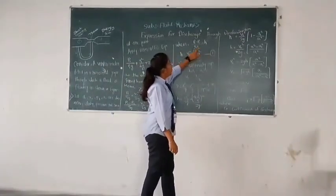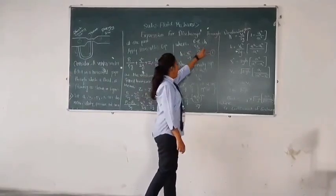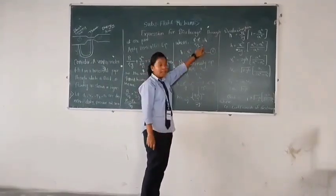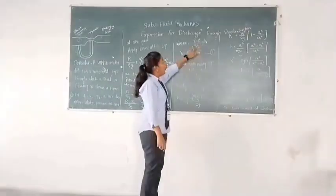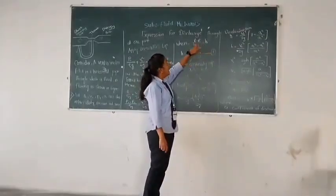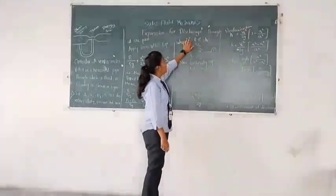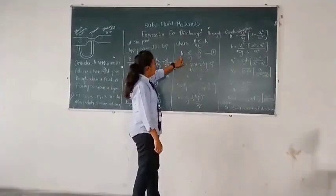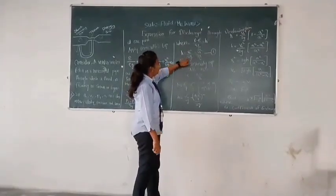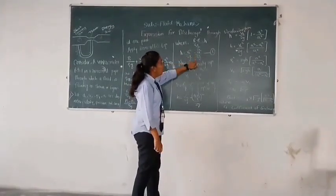Now (P1 - P2)/ρg equals H, as we have to find the height. So (P1 - P2)/ρg = H, and this is the pressure difference. So H = V2²/2g - V1²/2g. This becomes our first equation.